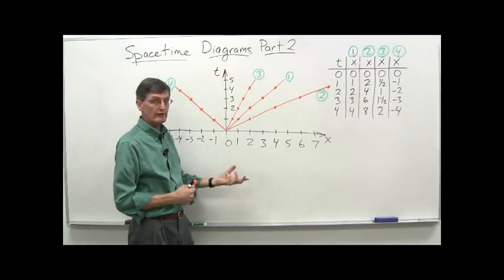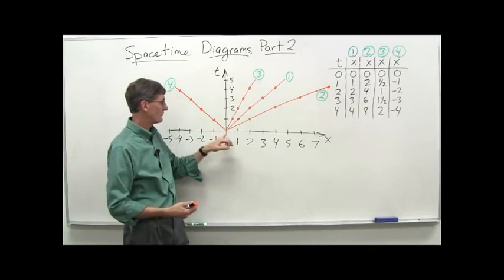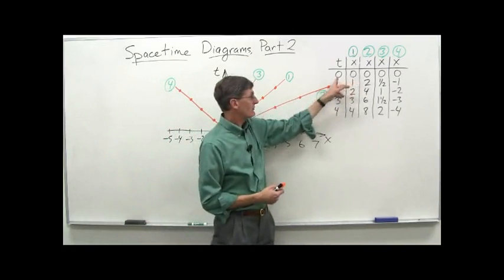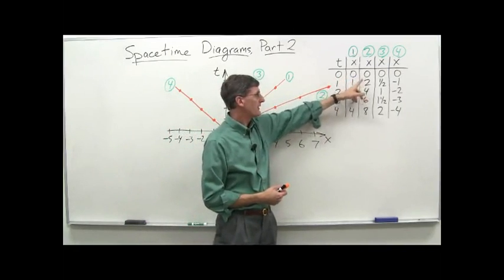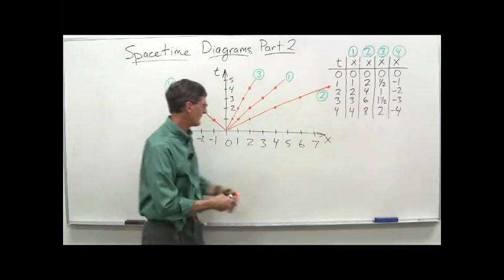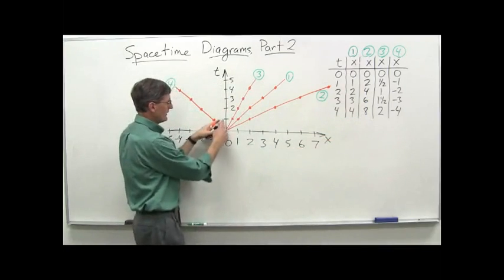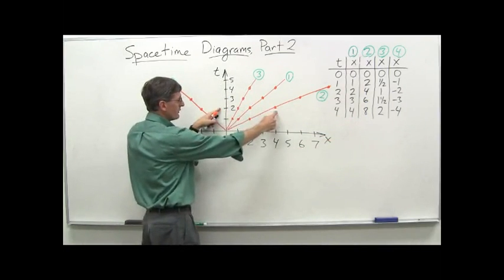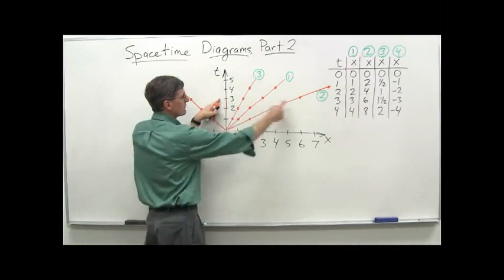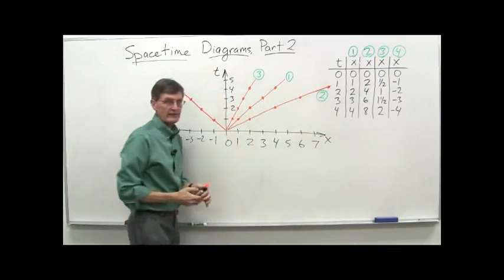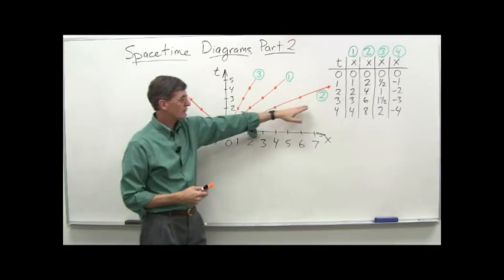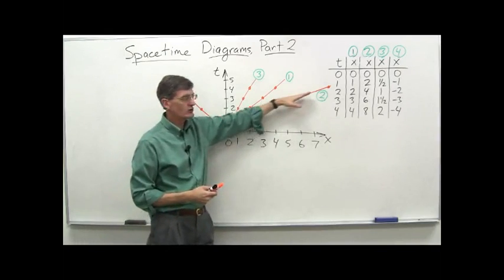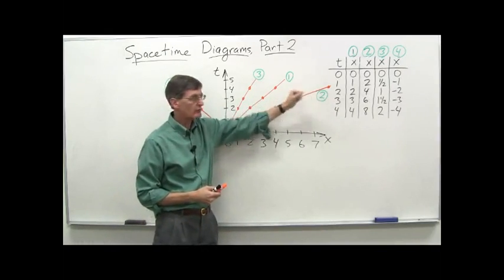That's run number one. Then we reset and start another run. At t equals zero it's at x equals zero, and then two, four, six, eight — so at t equals one it's at two, t equals two it's at four, t equals three it's at six, t equals four it's at eight. That is run number two, and this is the world line of our spaceship in run number two.